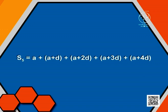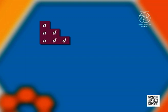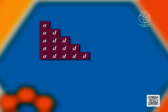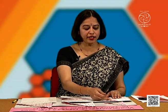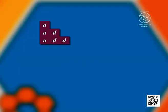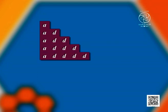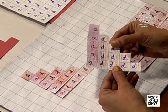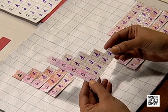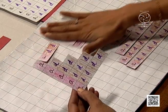Let us take these pieces and make a representation. This is A, A plus D, A plus 2D, A plus 3D, and A plus 4D. So you can see that we have put here A, A plus D, A plus 2D, A plus 3D, and A plus 4D. I have with me this piece representing the sum of first 5 terms of the given AP.